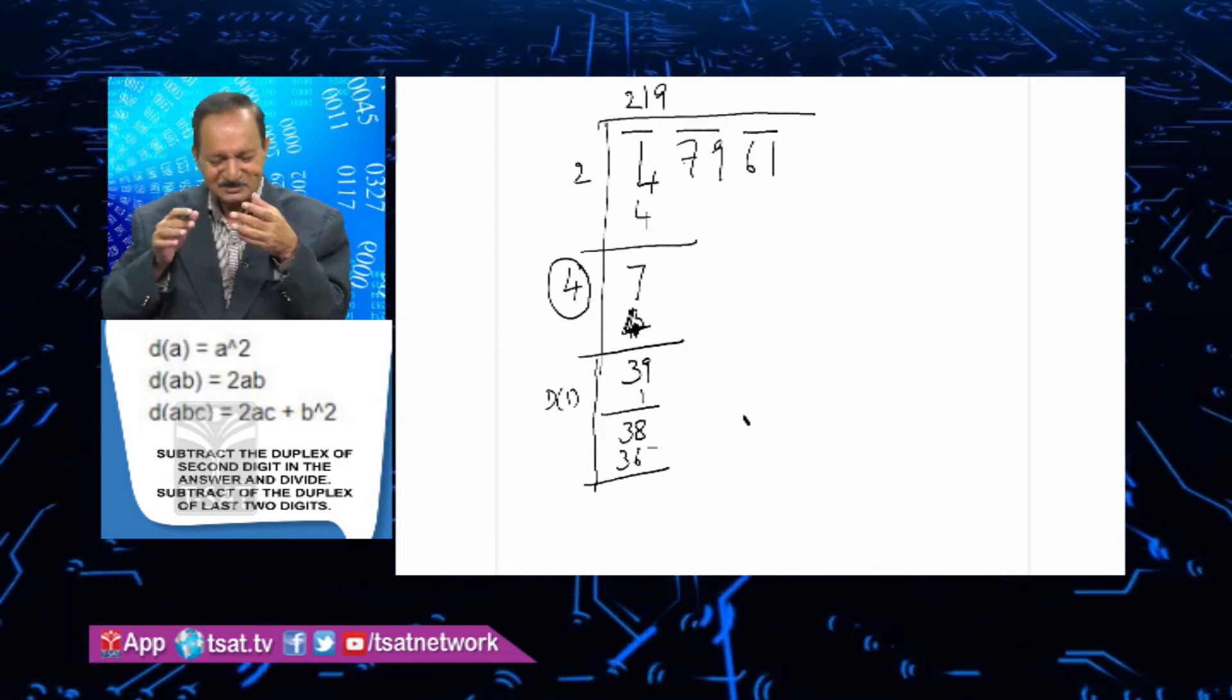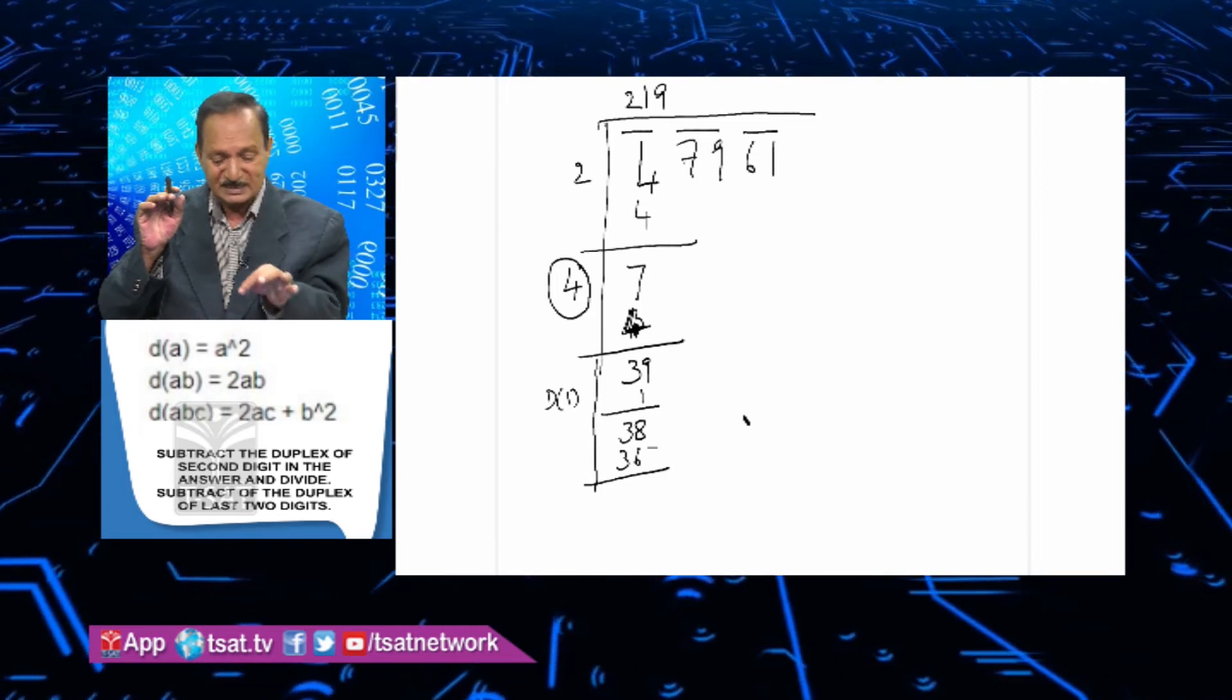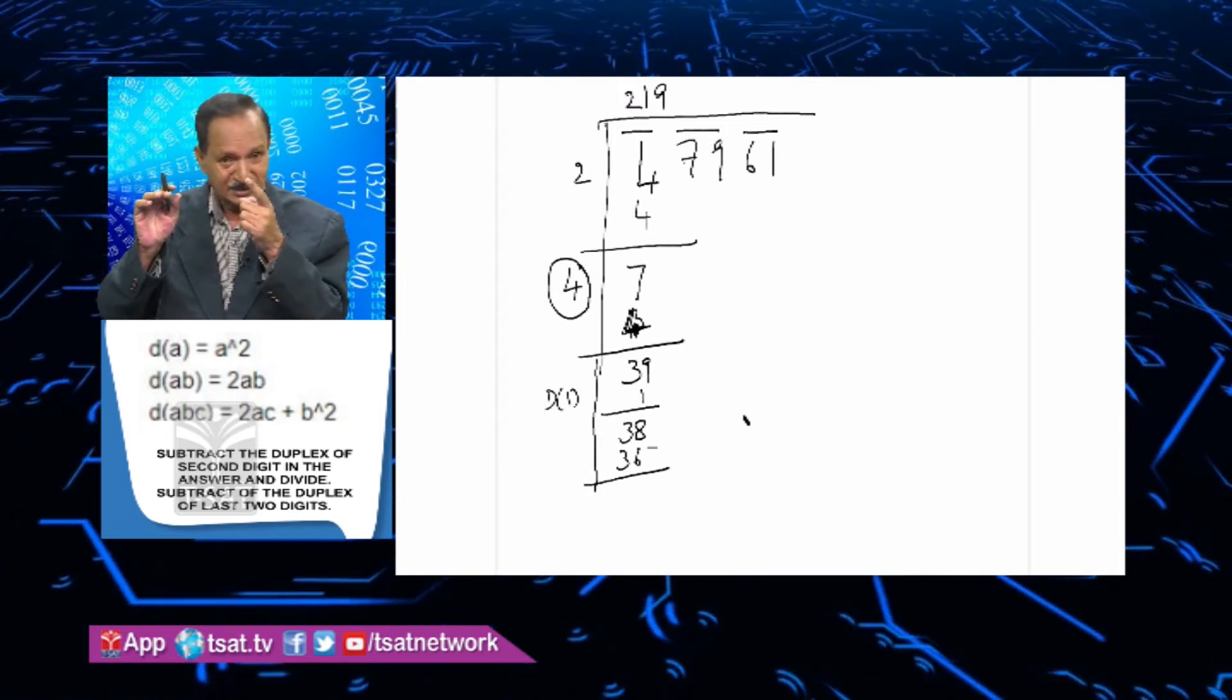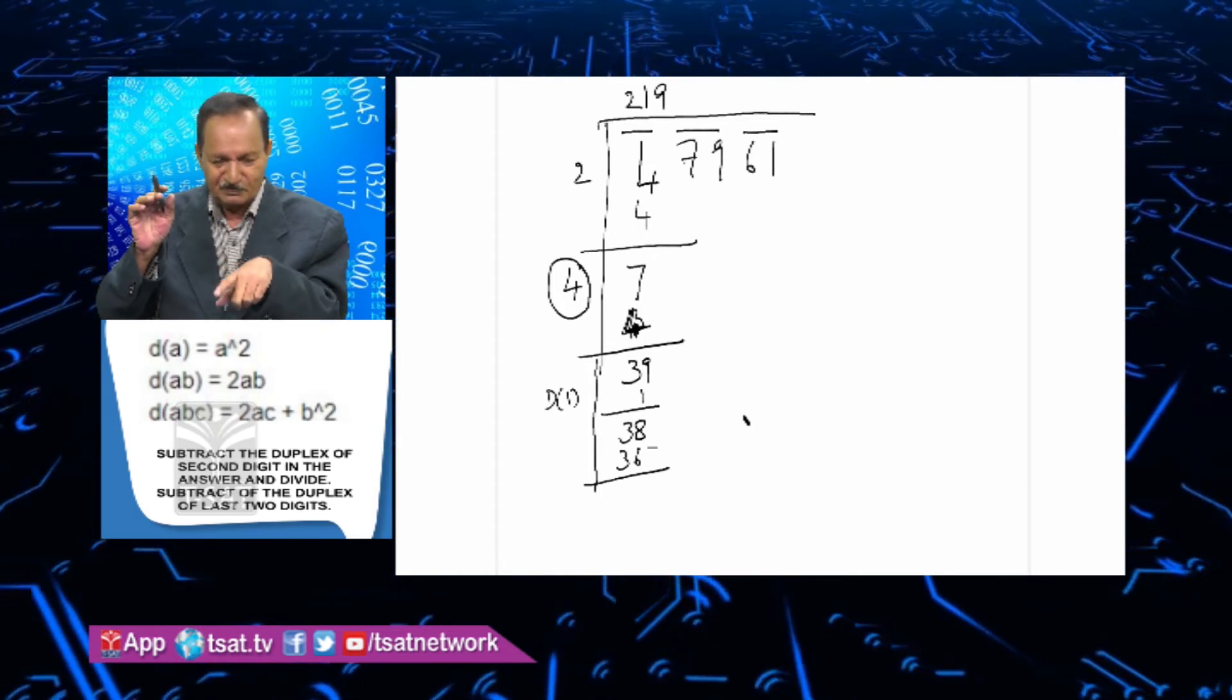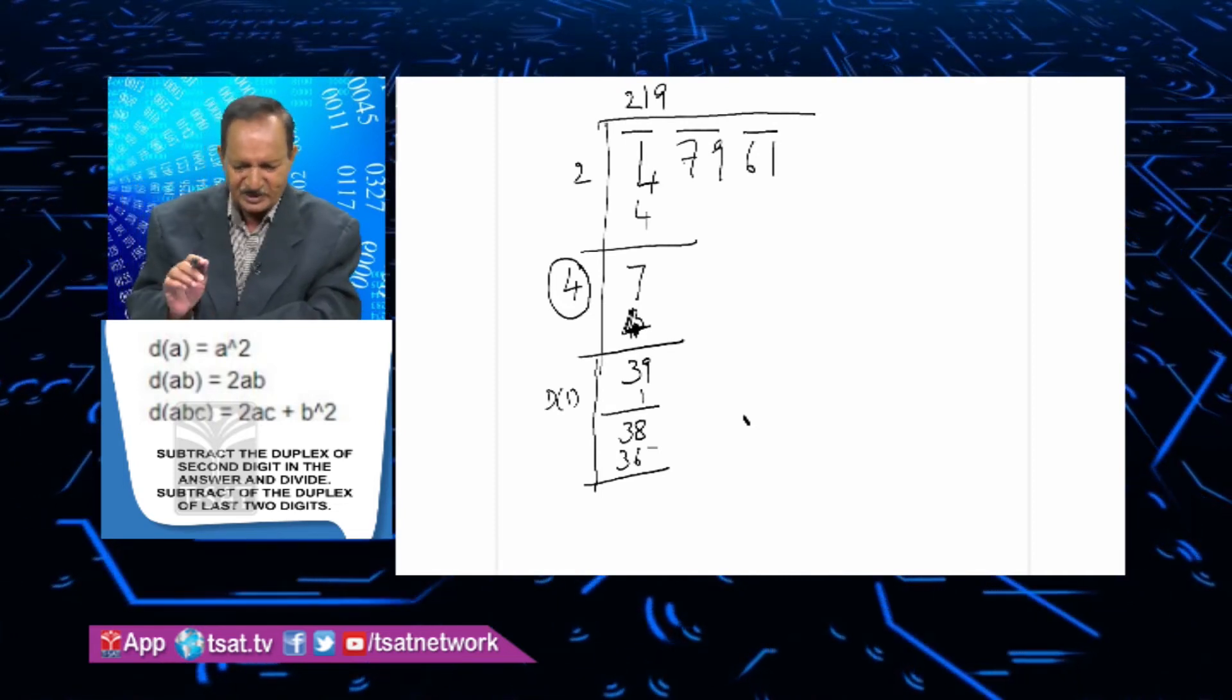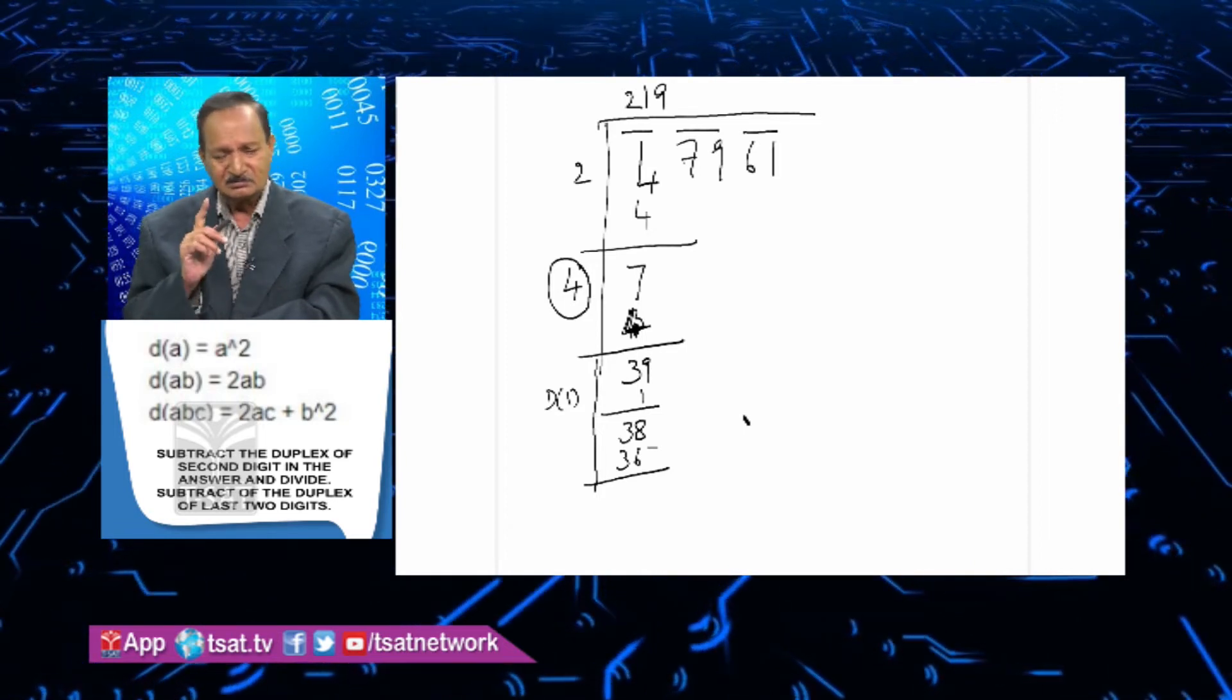It is one of the wonders - subtract the duplex of the second number in the answer. Duplex of a is a squared. For a-b it's 2ab. Duplex of 1 is 1 squared, which is 1. So 3 minus 1 is 2. Then 4 divided by 2 gives us 9. That is the answer. If it is a perfect square, 219 is correct - subtract the duplex of the second number in the answer, divide, and you got your answer.